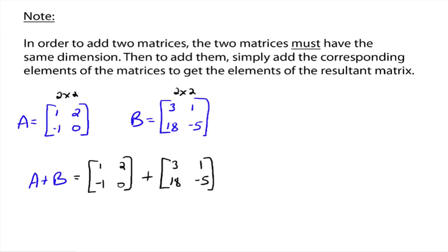All right, so then to add these two matrices together, just add corresponding entries. You're going to get another 2 by 2 matrix. And so 1 plus 3 would give you 4. 2 plus 1 would give you 3. Negative 1 plus 18 would give you 17. And 0 plus negative 5 would give you negative 5. And this is the new matrix that's the sum of these two matrices.